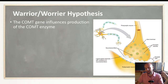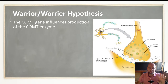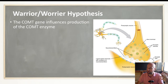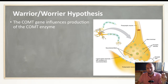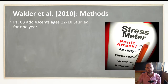Depending on what variant you have will influence your reaction to stress. The COMT gene influences the production of the COMT enzyme. This enzyme is similar to monoamine oxidase A — the MAOA gene — in that it's an enzyme which is released into the synapse and it helps break down neurotransmitters.